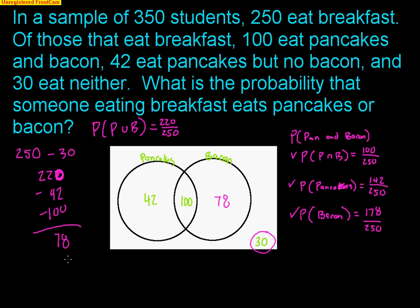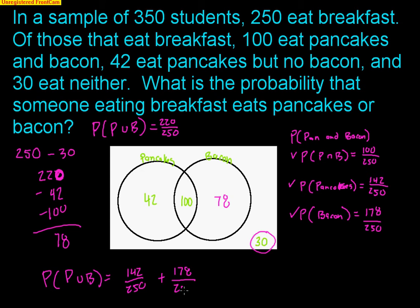Another way of getting the 'or', using the formula: the probability of pancakes or bacon equals pancakes (142 out of 250) plus bacon (178 out of 250) minus the overlap (100 out of 250). Look at the pancake circle — 142 kids; look at the bacon circle — 178 kids; minus the 100 overlap. So 142 plus 178 minus 100 is 220 out of 250.